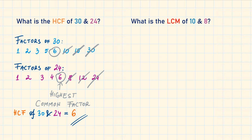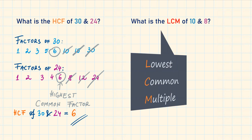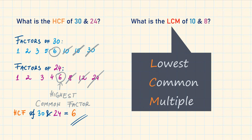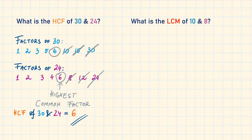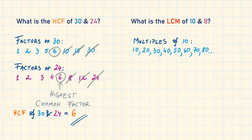Question 2: What is the LCM of 10 and 8? LCM stands for lowest common multiple. We will list the multiples, and the number we're looking for is the lowest number that is the same in both lists. The multiples of 10 are: 10, 20, 30, 40, 50, 60, 70, 80 and so on.